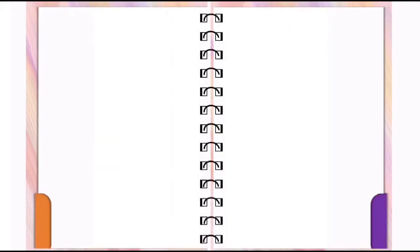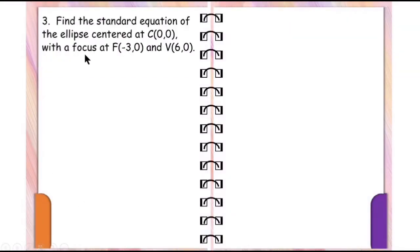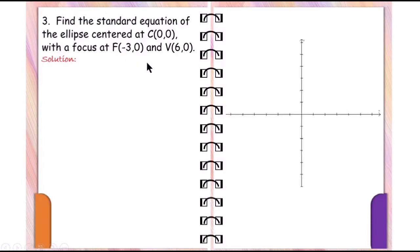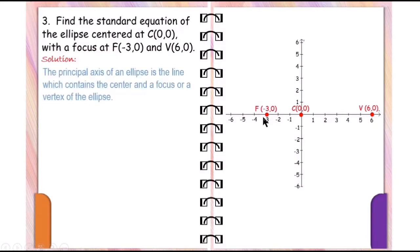Another example: Find the standard equation of the ellipse centered at the origin with the focus at (-3, 0) and vertex at (6, 0). In this problem, the equation is no longer given, so we need to find the standard equation given one vertex and one focus. First, let us plot these points. The center is at the origin, one vertex at (6, 0), and the focus at (-3, 0). Since the focus, center, and vertex are located on the x-axis, we use the equation x squared over a squared plus y squared over b squared equals 1.